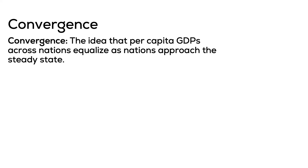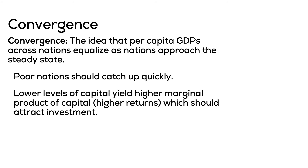The other idea from the Solow growth model is convergence — the idea that per capita GDP across nations will eventually equalize. As nations approach their steady state, smaller economies will eventually catch up to richer economies. That's because the marginal product of capital is high for countries with low capital, so their growth rates will be higher. As rich economies reach their steady state, less developed economies will be able to catch up. The hypothesis is: less developed countries should have higher growth rates than rich countries.